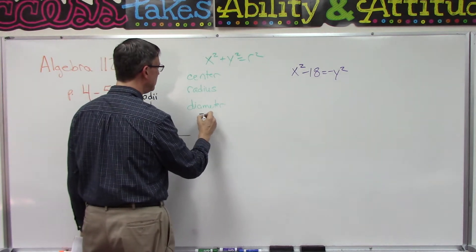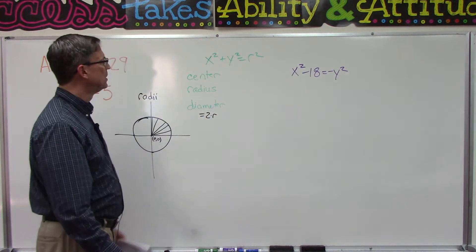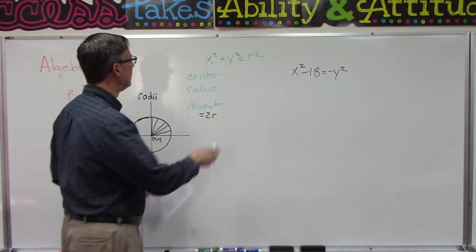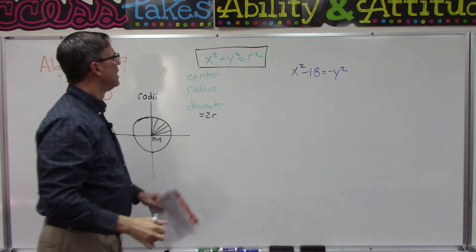So the radius, the diameter, that's actually pretty simple. The diameter is always two times whatever the radius is.